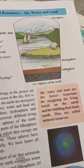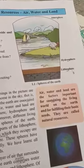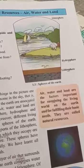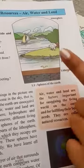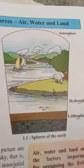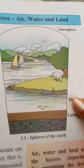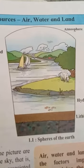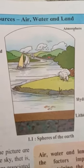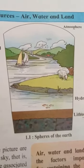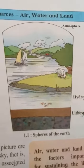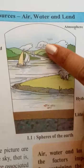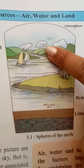Standard six, first chapter: Natural Resources - Air, Water and Land. Now look at this picture, observe it carefully and give me the answers. First question: where do we see the birds? See, the birds are here — these birds are flying in the sky.